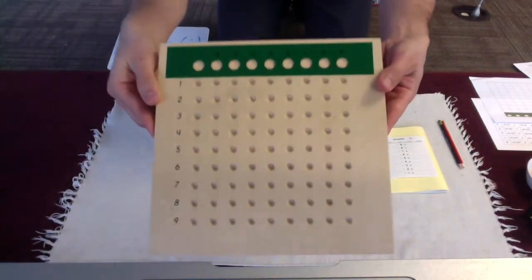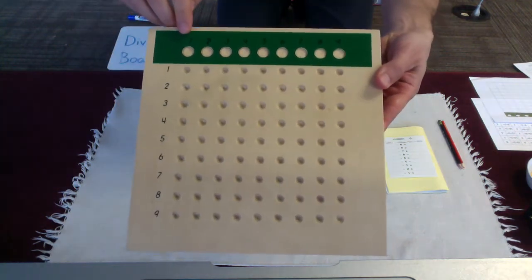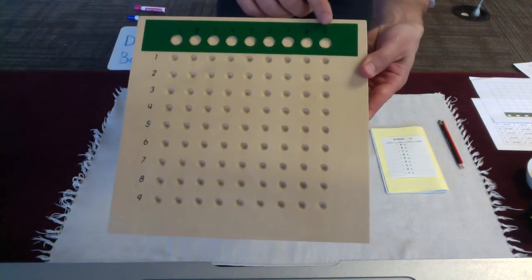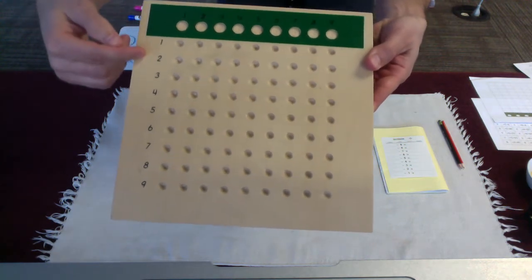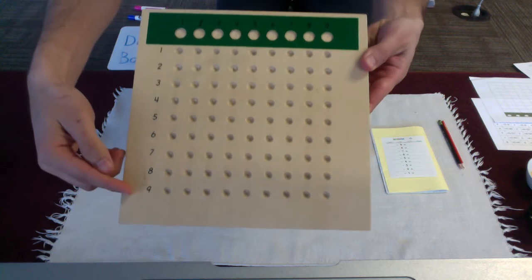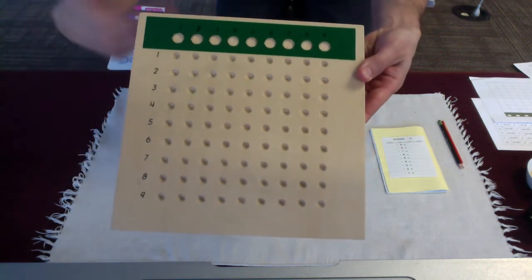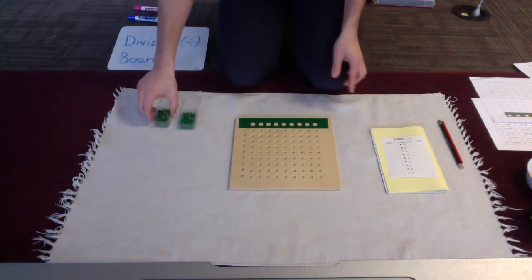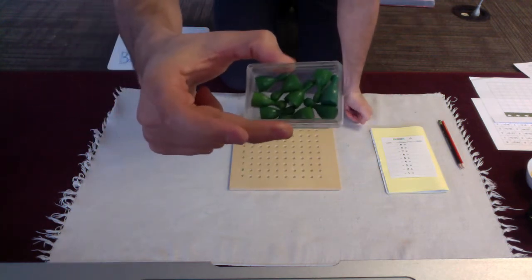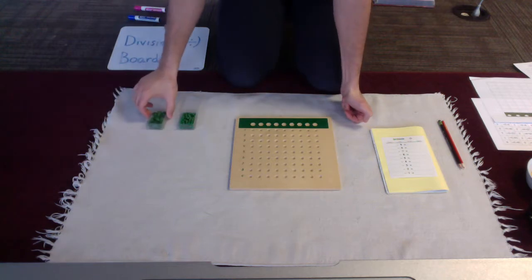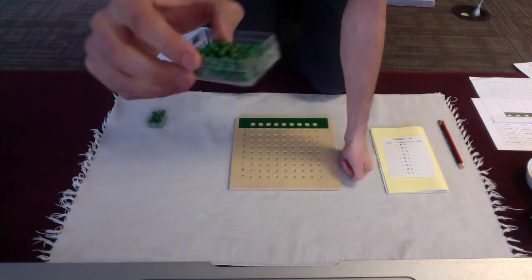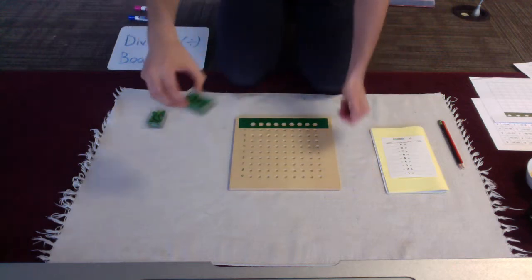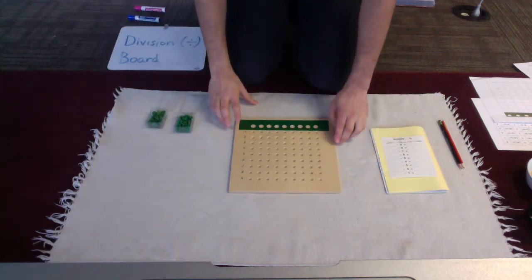All right, so our division board has the numbers 1 through 9 up here in green. This is where our divisor will be. Going down the side, we also have 1 through 9. That will help us figure out what our answer or the quotient is. We will also be using some greedy green goblins or Skittles. Those will be our divisor. And then we have 81 units, which we will use as our dividend.